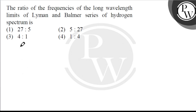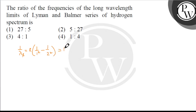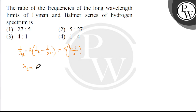Ab Lyman series ki jo longest wavelength hogi, woh hum lete hain. Lyman ko L se denote karte hain. 1 upon lambda_L is equal to R into (1/1² minus 1/2²), which gives R into (1 minus 1/4), that is (4 minus 1)/4 = 3R/4. So lambda_L is equal to 4 upon 3R. This is our first equation.